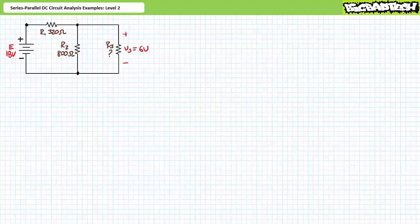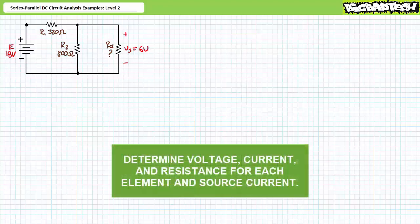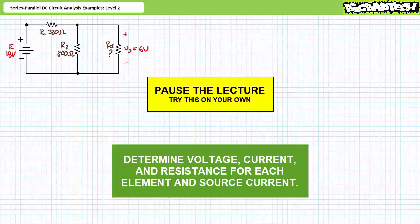Our first illustrated example problem features a series parallel combination of three elements: R1 a 320 ohm resistor, R2 an 800 ohm resistor, and R3 an unknown resistor — however, we do know it is experiencing a six volt drop. We're being asked to solve for the voltage drop across each element, the current through each element, the unknown resistance R3, and the source current. By all means pause the lecture and try this on your own. If you're tracking, you should have obtained the following results.